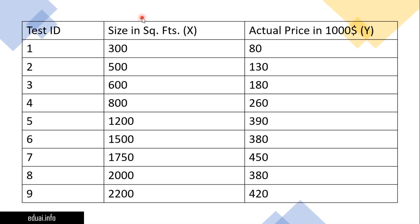To understand that, let's go back to our data. This is the data we have trained our model on. We have given 300, 500, 600, 800, and 1200 as x input, and we wanted to predict the price that is the y output.